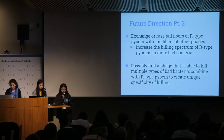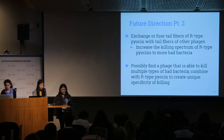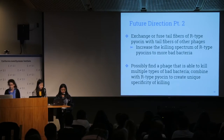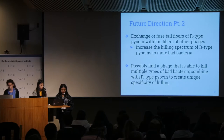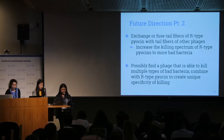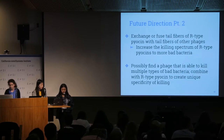By replacing the Pyocin tail fibers with tail fibers of Pseudomonas phage PS17, we changed the bactericidal specificity of R2 Pyocin particles to a different subset of P. aeruginosa strains, including some resistant to PS17 phage. We further extended this idea by fusing parts of R2 tail fibers with parts of tail fibers from phages that infect other bacteria, including E. coli and Yersinia pestis, changing the killing spectrum of Pyocins from P. aeruginosa to the bacterial genus, species, or strain that serves as a host for the donor phage.